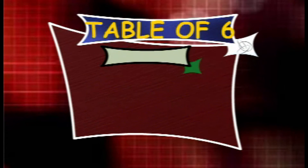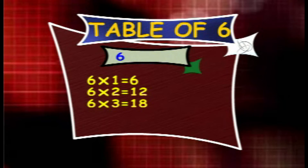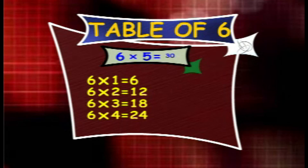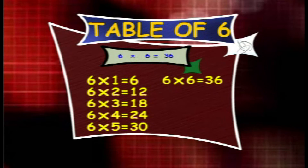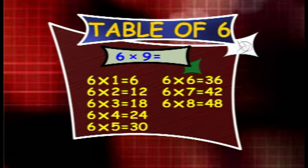Table of 6. 6 1s are 6, 6 2s are 12, 6 3s are 18, 6 4s are 24, 6 5s are 30, 6 6s are 36, 6 7s are 42, 6 8s are 48, 6 9s are 54, 6 10s are 60.